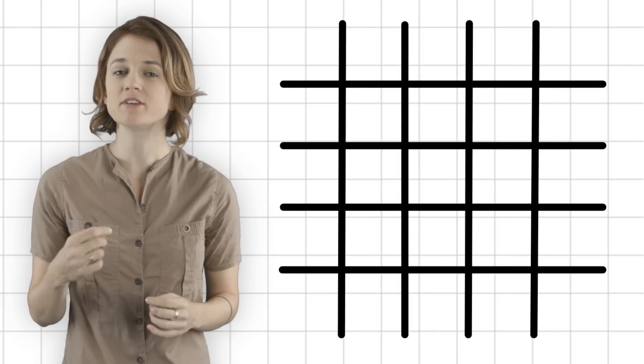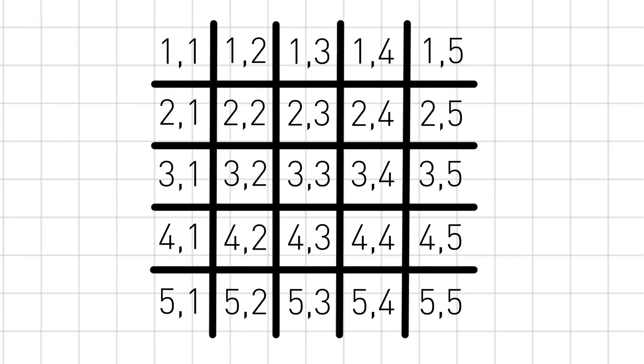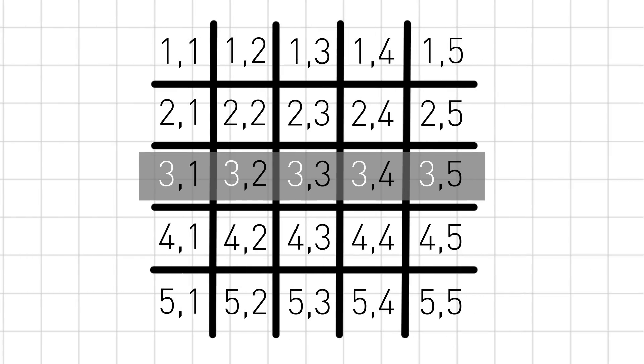Let's start by making very explicit what the winning lines look like on the 2-dimensional board. We'll give each square a pair of numbers, its row and column, like this. Here's an example of a winning row. The first coordinates, the row, are the same. And the second coordinates are all different. They increase from 1 to 5.